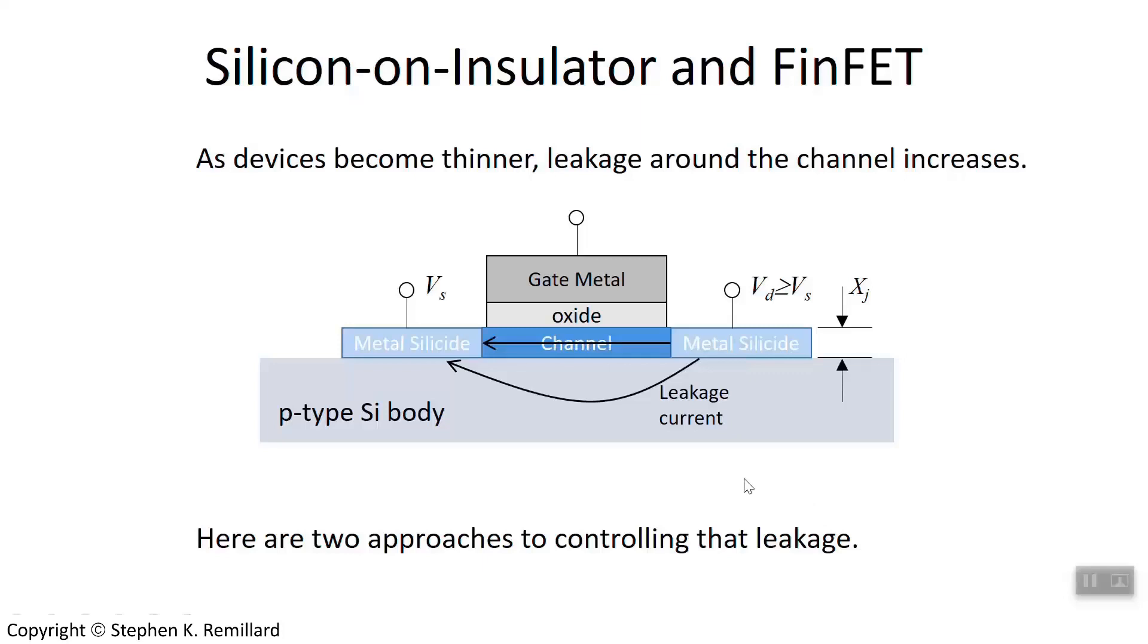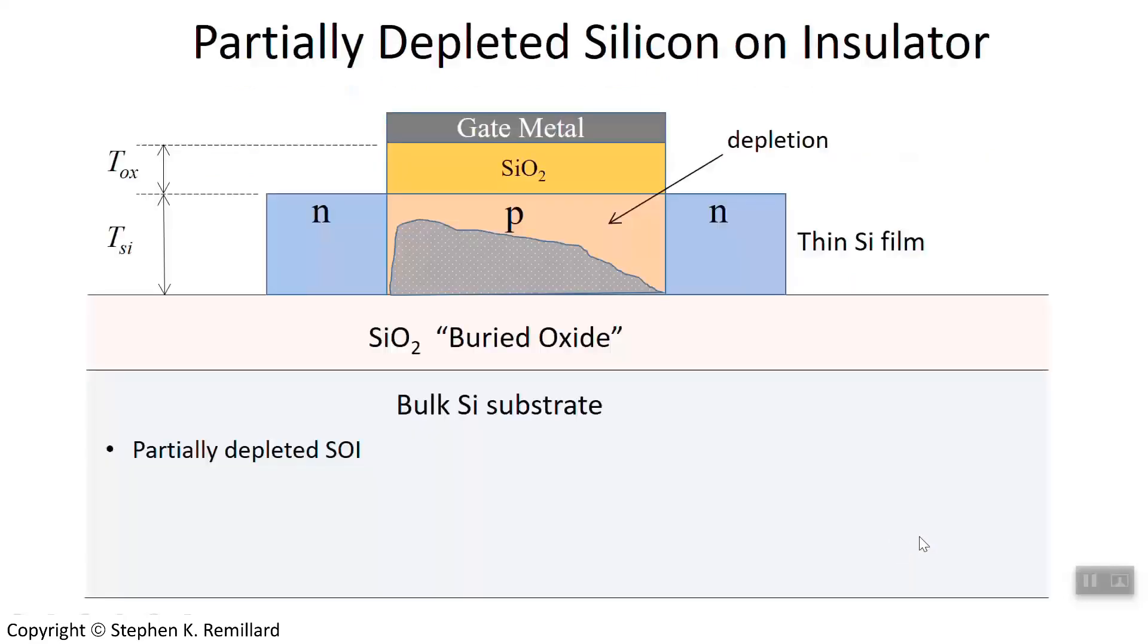This leakage current, of course, is undesirable. It is an elevation of off current, so we want to avoid it. So I will describe here two approaches that are now being used for controlling leakage current.